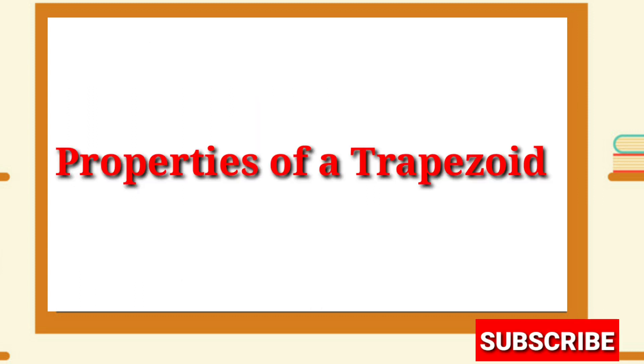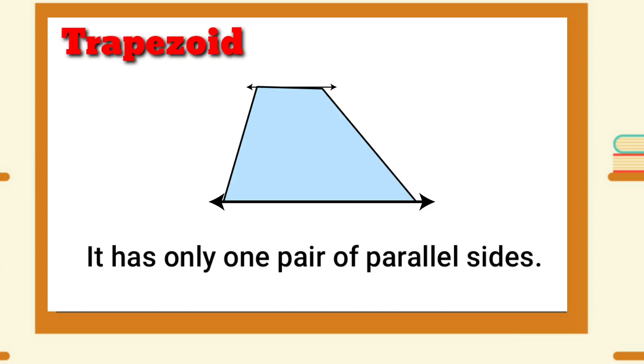Properties of a Trapezoid: It has only one pair of parallel sides.